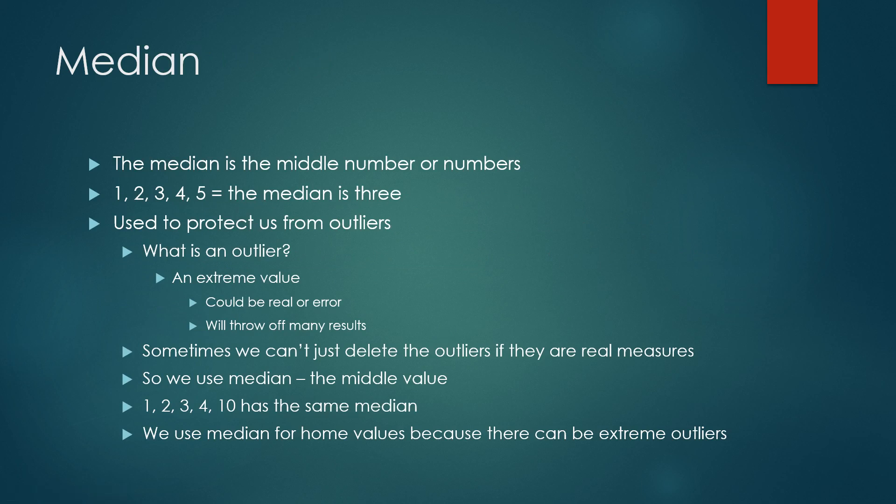Median is the middle number or middle numbers. It depends on whether or not you have an odd number of total numbers or an even number of total numbers. In our first example here, we have an odd number. We have 1, 2, 3, 4, 5. And the middle number is 3. You do that by putting them in order and eliminating one from both ends until you get down to the single one that's in the middle. The challenge that you get is sometimes it's an even number. And when you get to the middle, we could have 1, 2, 3, 4, 5, 6. If we eliminated from both ends, we're going to wind up with 3 and 4. And what we do in that case is we actually add 3 to 4 and we divide by 2 to come up with 3 and a half, which would actually be our median in that example.